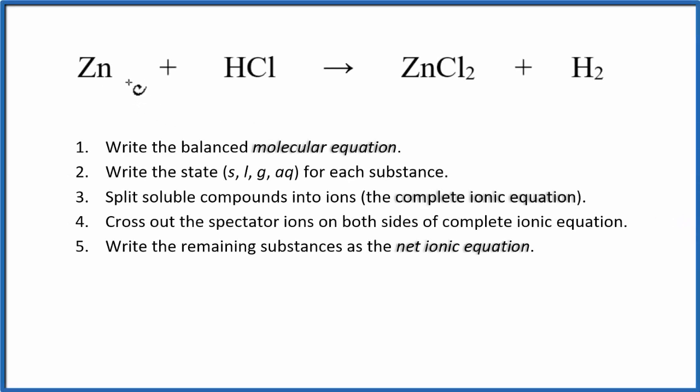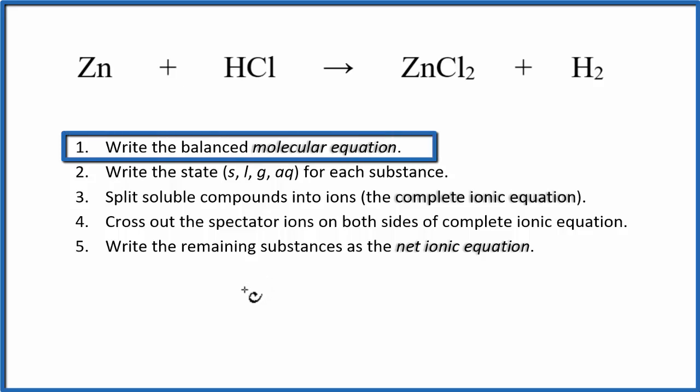To write the net ionic equation for Zn plus HCl, that's zinc plus hydrochloric acid, let's follow these steps. The first thing we need to do is balance the molecular equation. If we put a 2 in front of the HCl, that'll balance the molecular equation.